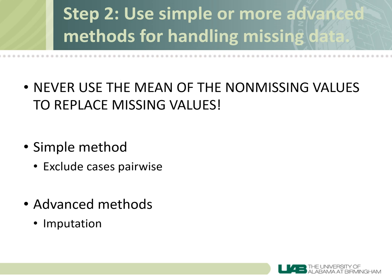Imputation replaces missing values with a reasonable guess based on the distributions and relationships among variables in the data set. There are several methods of imputation, and the method you use depends on whether your data are missing in a monotone or arbitrary pattern. In SPSS, you can choose whether you want to use a monotone or the non-monotone Monte Carlo method in the methods tab under imputing missing data values.